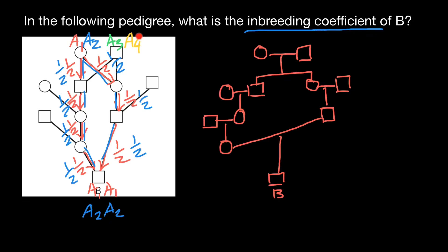The same is true for the two alleles that person B can get from the second common ancestor. The pathway or loop would be slightly different this time — through this, this, this, and this — forming a loop. This is how he can get two A3 alleles identical by descent. And the last variant would be this pathway, forming another loop — A4, A4 — alleles identical by descent inherited from this ancestor. So we have four variants for how person B can get two identical alleles at locus A.